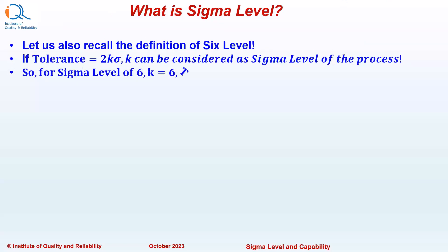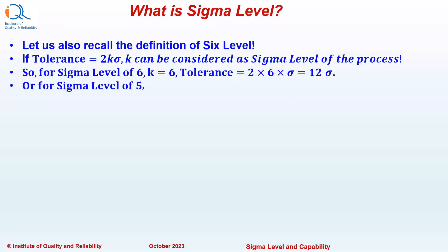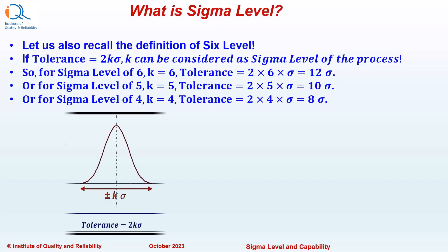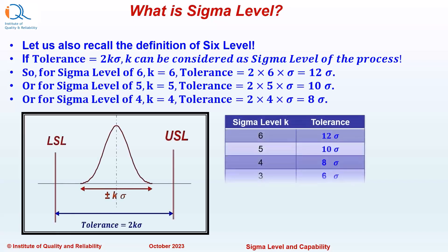So for a Sigma Level of 6, Tolerance will be equal to 12 Sigma. For Sigma Level of 5, Tolerance will be equal to 10 Sigma. For Sigma Level of 4, Tolerance will be equal to 8 Sigma, and so on. The table shows this.